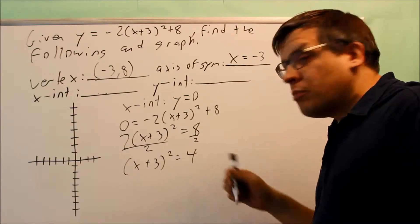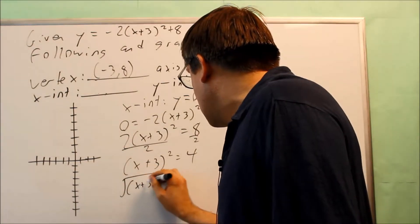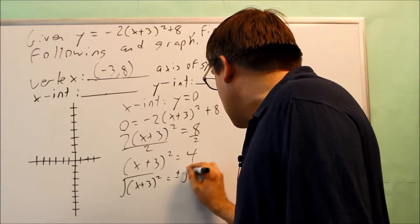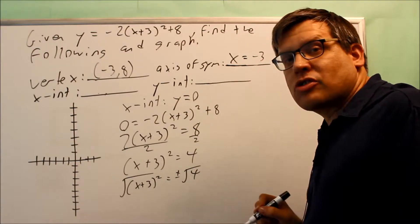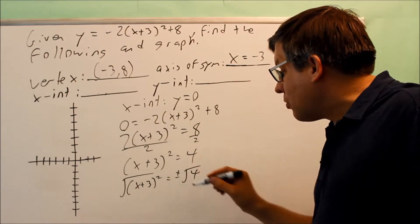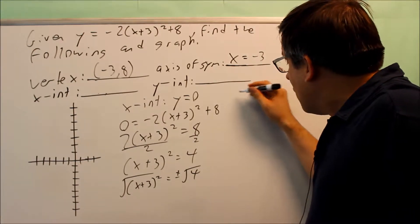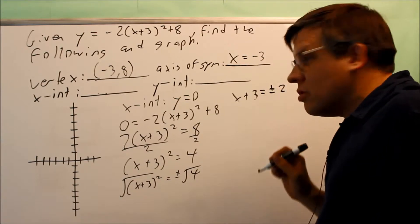So now what I want to do is I want to square root both sides of the equation. So I'm going to square root this side, and then I'm going to do the square root of the other side. Remember that you've got to put plus or minus on that. Whenever you take the square root of both sides, you need to make sure you have a plus or minus there on that one. You're going to end up with x plus 3 equals plus or minus 2.